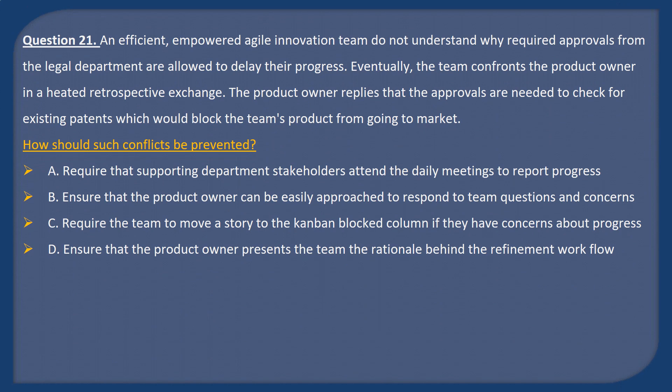Question 21. An efficient, empowered Agile innovation team does not understand why required approvals from the legal department are allowed to delay their progress. Eventually the team confronts their product owner in a heated retrospective exchange. The product owner replies that the approvals are needed to check for existing patterns which would block the team's product from going to market. How should such conflicts be prevented? A: Require that supporting department stakeholders attend the daily meetings to report progress. B: Ensure that the product owner can be easily reached to respond to team questions and concerns. C: Require the team to move a story to the Kanban blocked column if they have concerns about progress. D: Ensure that the product owner presents the team the rationale behind the refinement workflow.